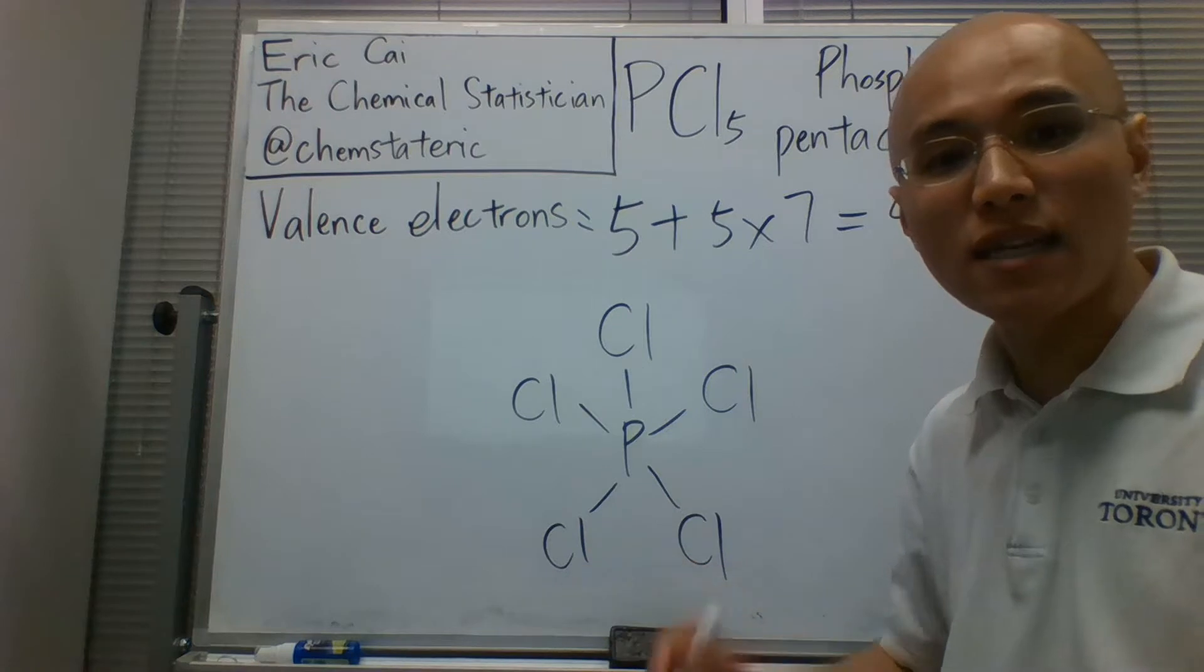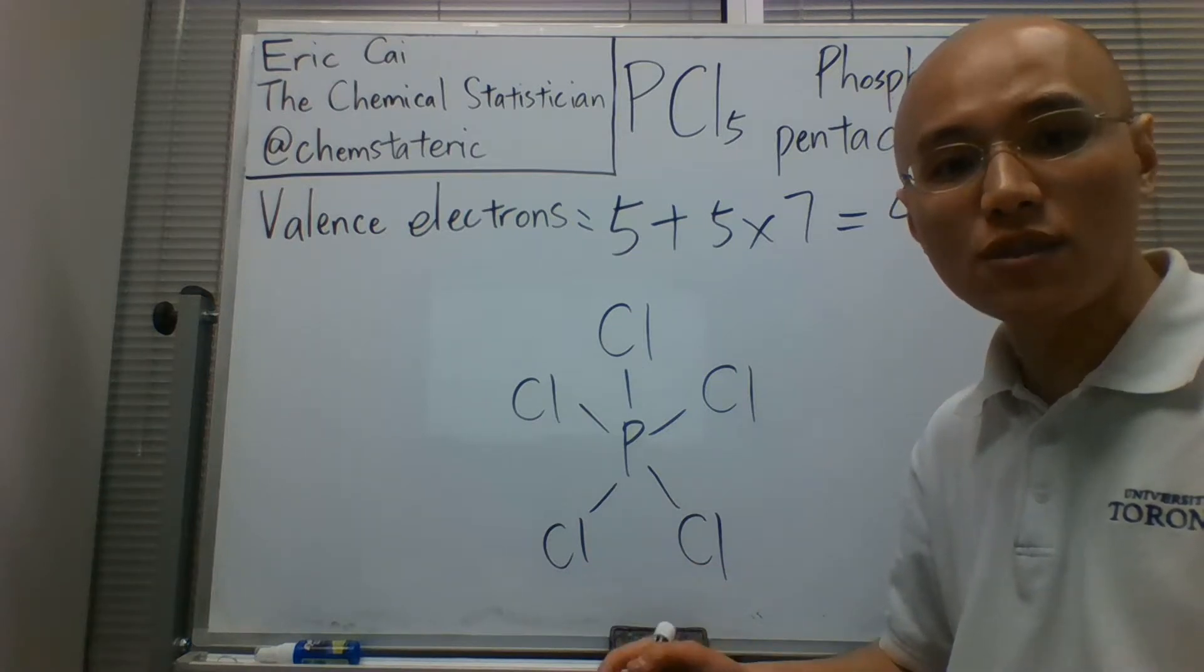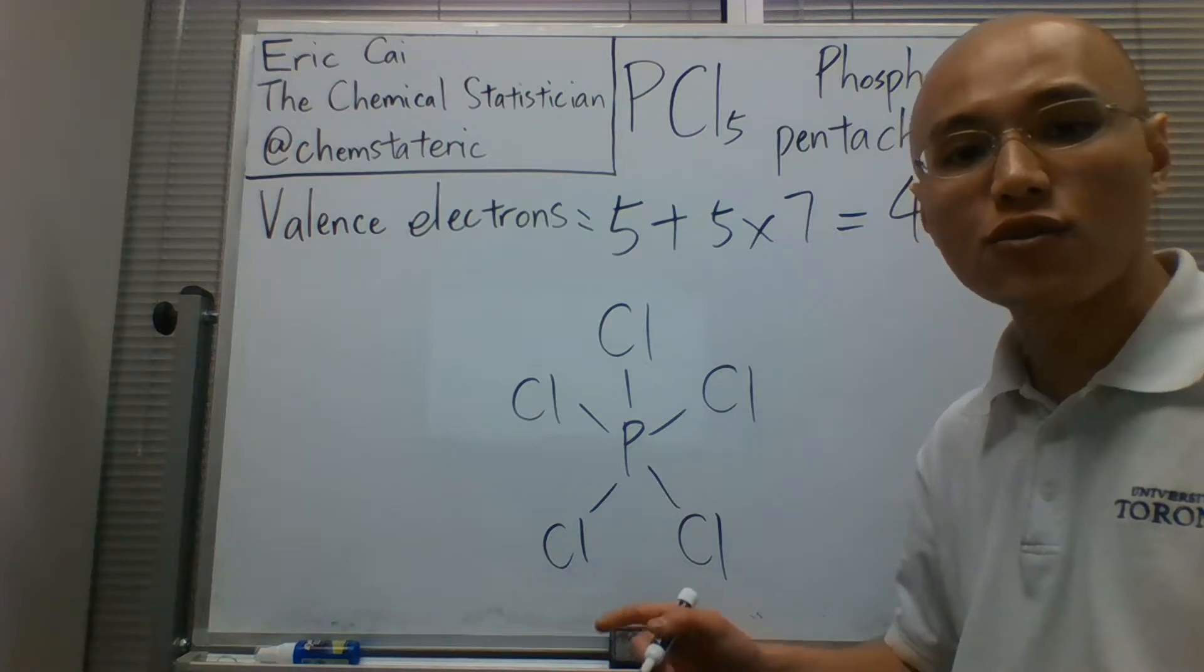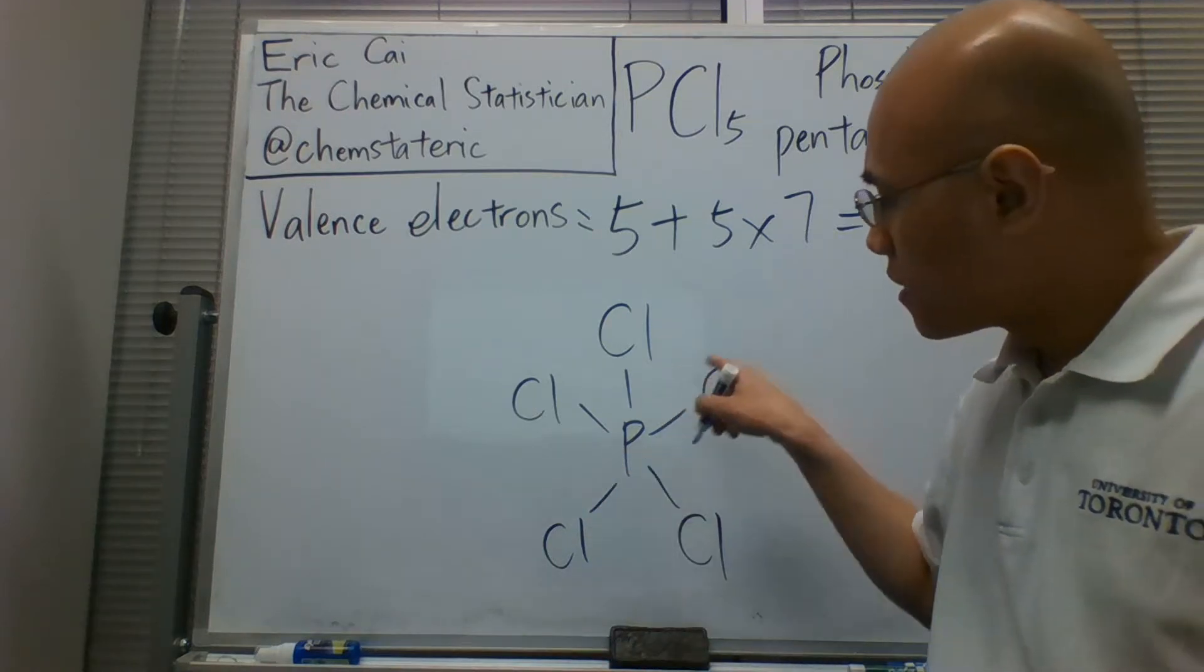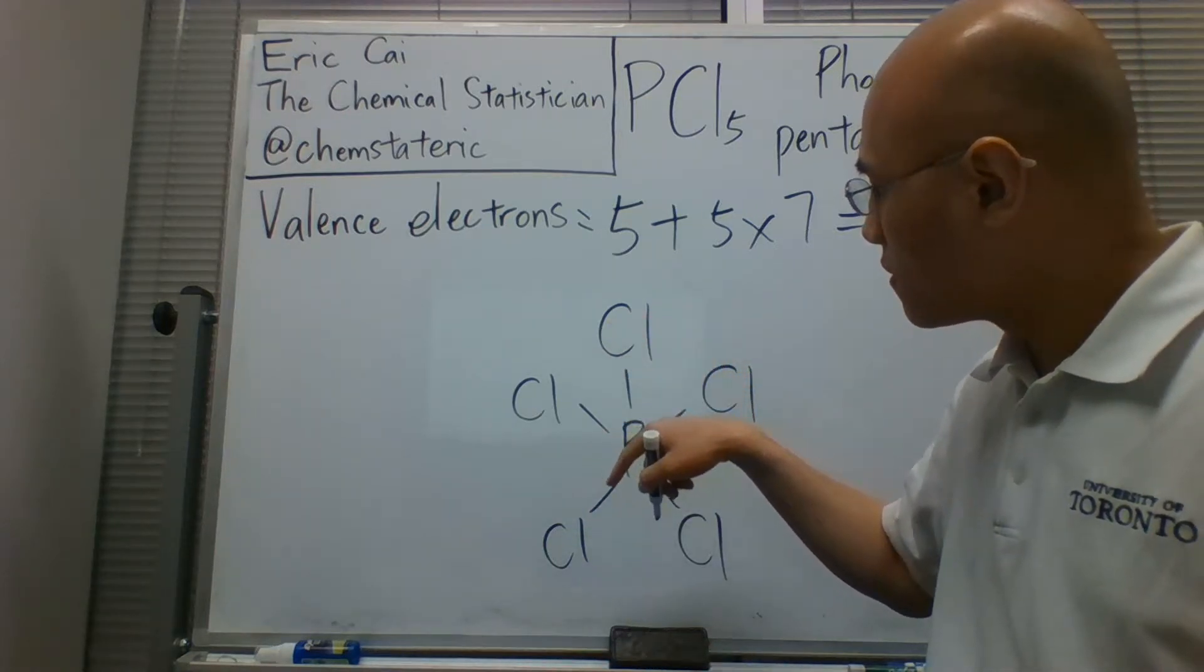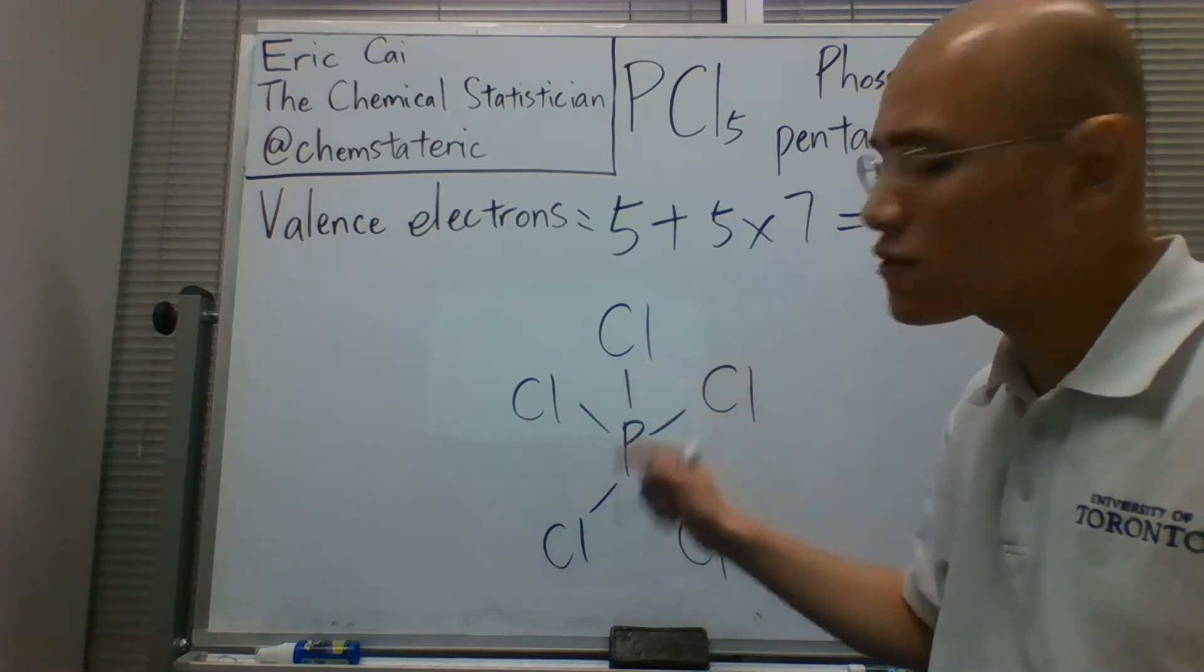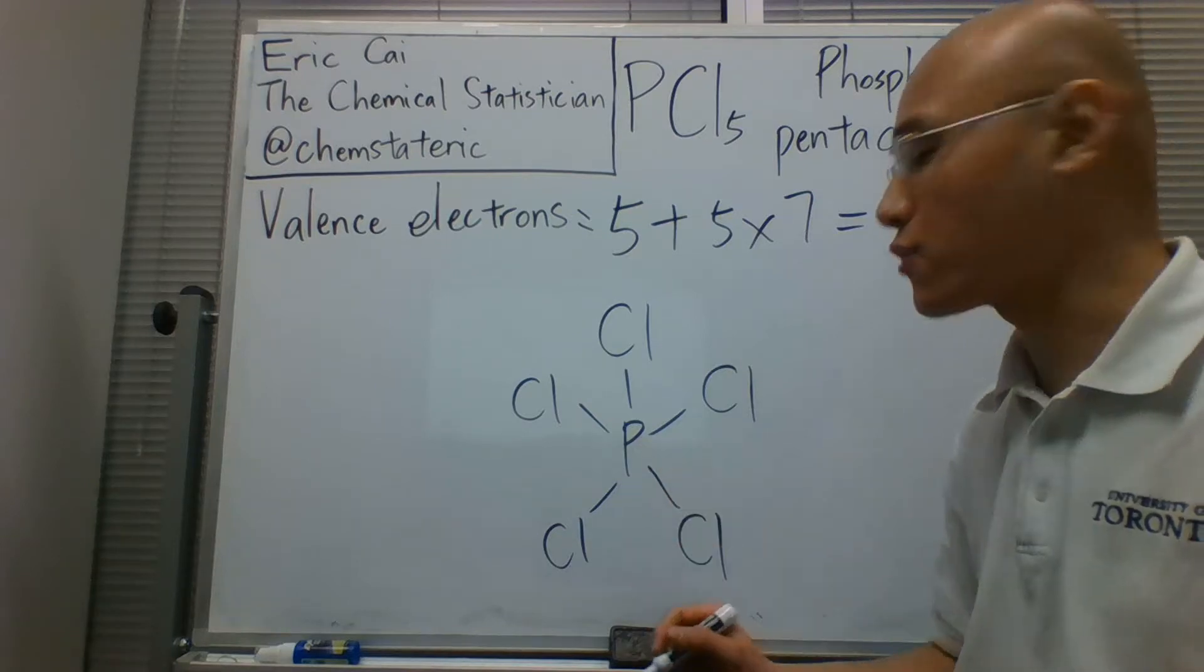That takes away 10 electrons. So we now need to distribute the other 30 electrons, and I encourage you to distribute them amongst the atoms in the periphery. So each of those five chlorines will get six electrons.